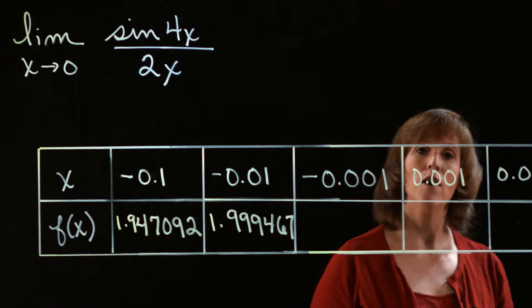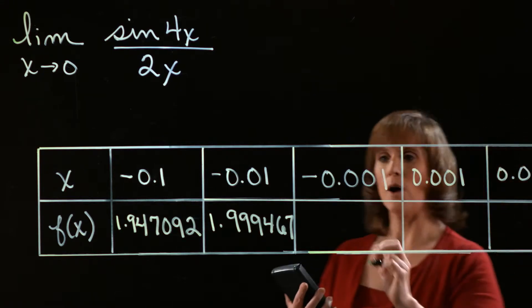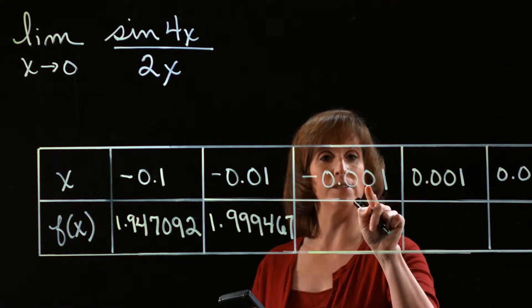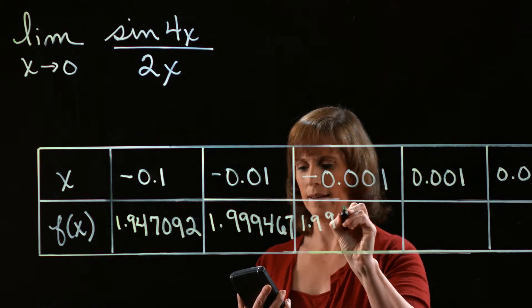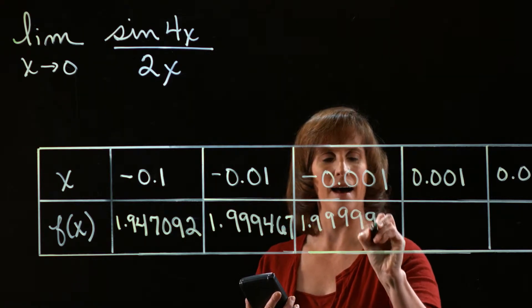Now I'm going to do a similar thing for the rest of these as well. So when I plug in negative 0.001, I end up with 1.999995.